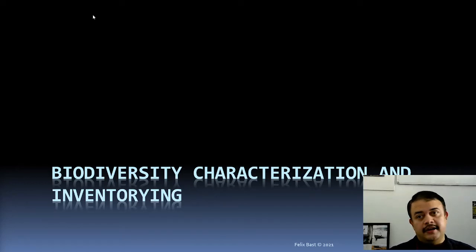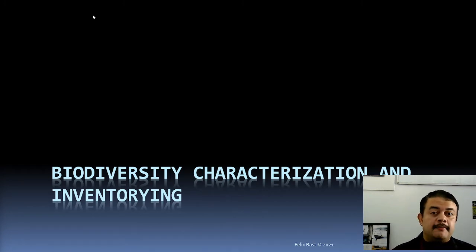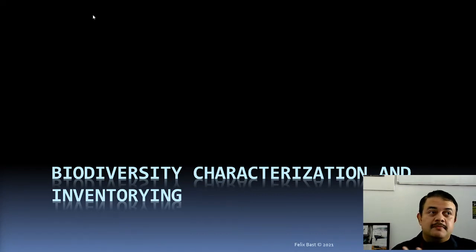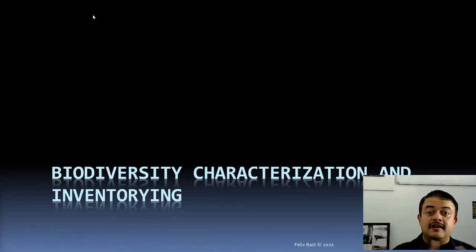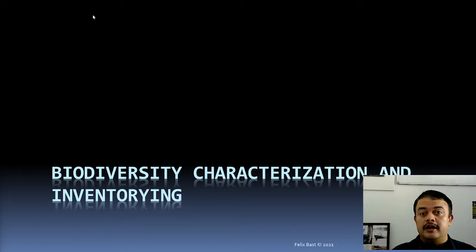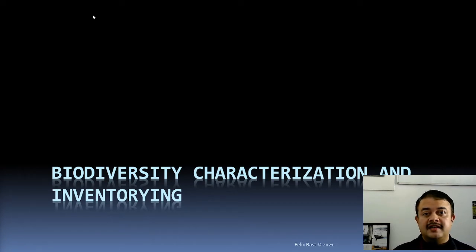Biodiversity Characterization and Inventory — how do these two terms differ? Biodiversity is the sum total of the complete diversity of living beings on planet Earth, and these are not chaotic or random creatures but are all interrelated by the tree of life. So how do you characterize this biodiversity, and how do you make a list of species we already know? That is called inventorying.